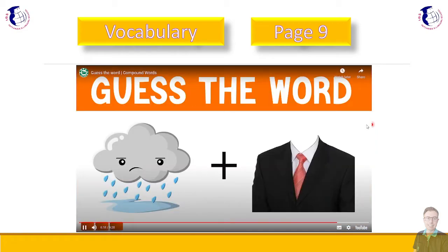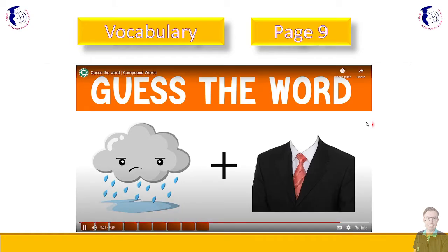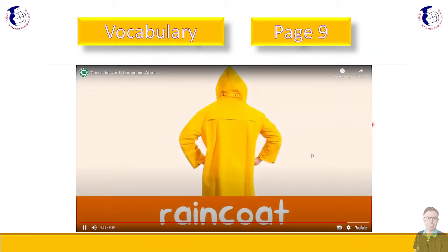Hmm. What have we got here? So remember, we had rainbow earlier. But what could this one be? It's a raincoat. Useful if it is raining outside.